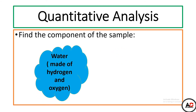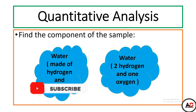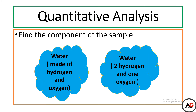For example, water — ہم نے water کی qualitative analysis کی اور پتہ چلا کہ this sample is water۔ پھر water کے components کا پتہ لگایا: water is made of hydrogen and oxygen۔ Quantitative analysis میں ہم نہ صرف components کا پتہ لگاتے ہیں بلکہ ان کا ratio بھی چیک کرتے ہیں — there are two hydrogen and one oxygen۔ This is the quantitative analysis of matter.